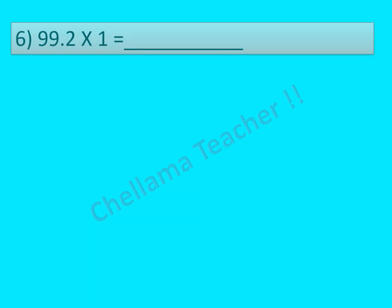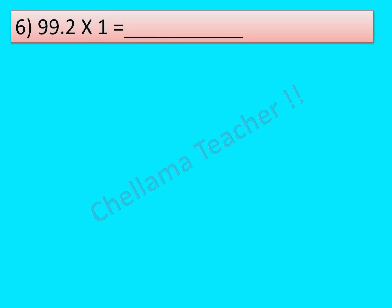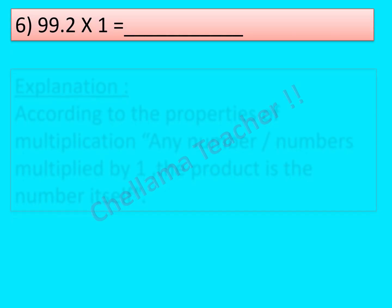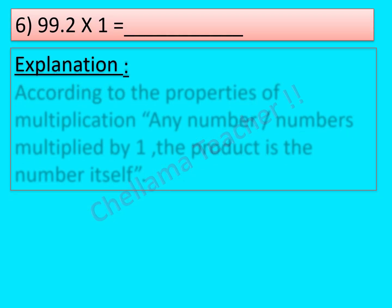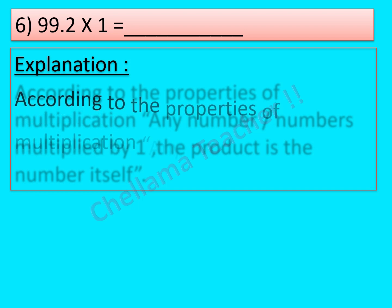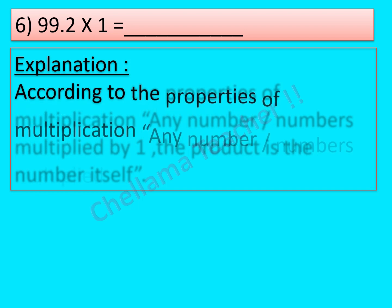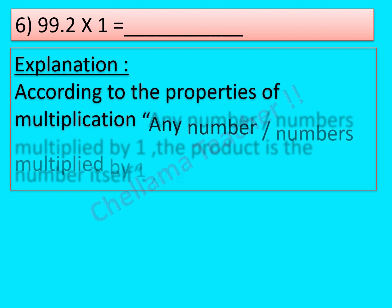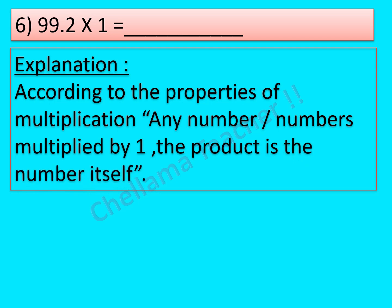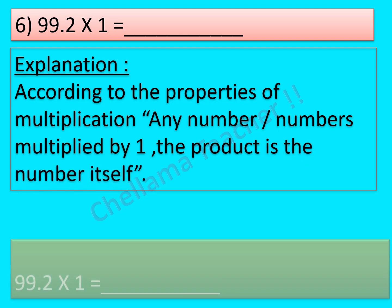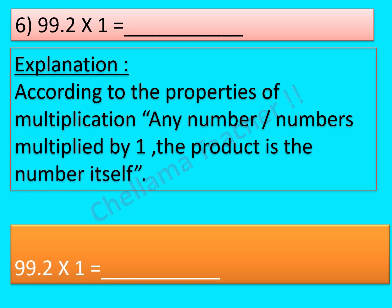Question No. 6: 99.2 × 1 is equal to dash. According to the properties of multiplication, any number multiplied by 1 gives the number itself. So 99.2 × 1 is equal to 99.2.